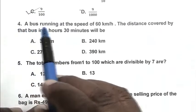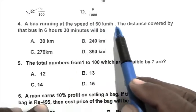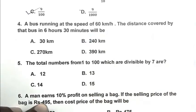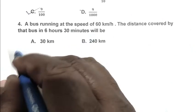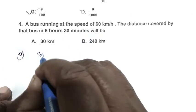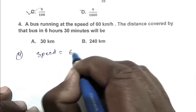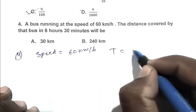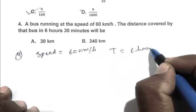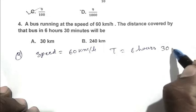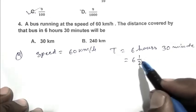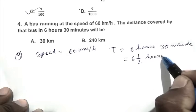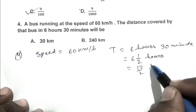Question number 4, a bus running at a speed of 60 km per hour, the distance covered by that bus in 6 hours 30 minutes will be. Speed is 60 km per hour, time is 6 hours 30 minutes, that is 6 and a half hours, which equals 13 by 2 hours.